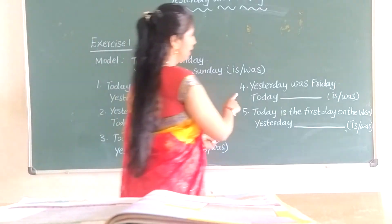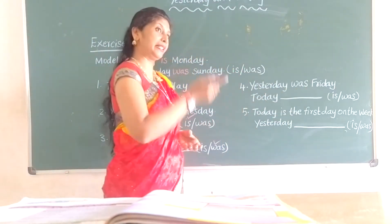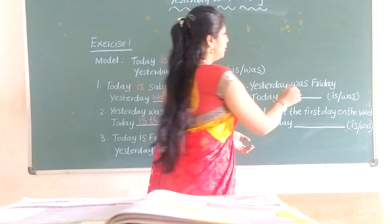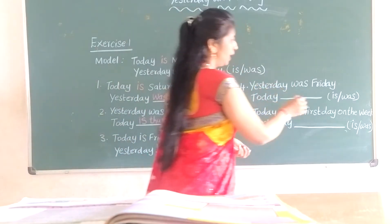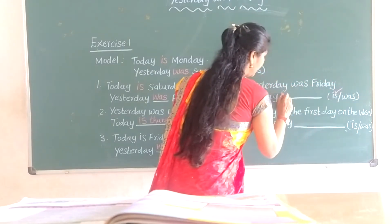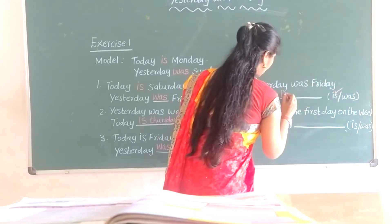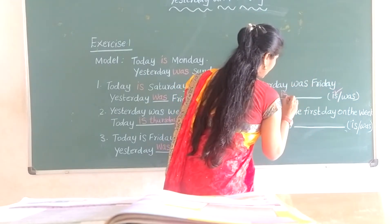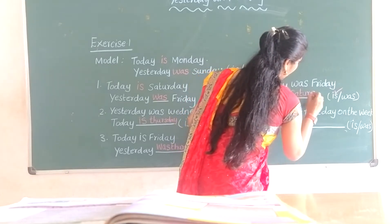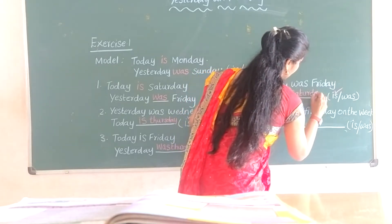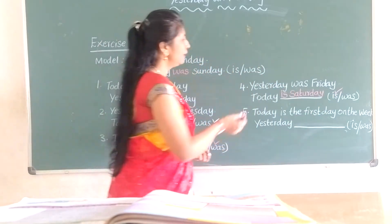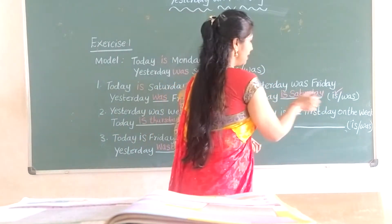Next, fourth one: Yesterday was Friday. Yesterday means past tense, so use 'was'. Today is Saturday. Yesterday was Friday, today is Saturday.